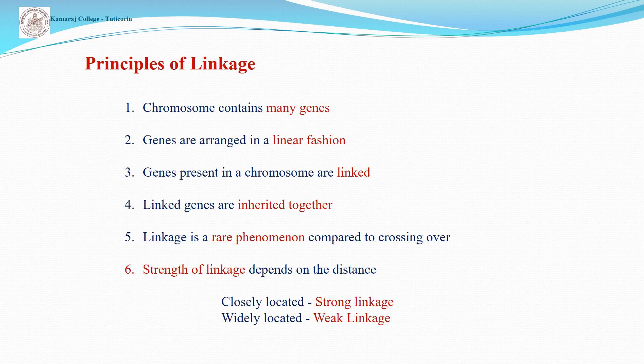These are some of the significant characters for linkage. The chromosomes contain many genes. The genes are arranged in a linear fashion in chromosomes, and the genes present in the chromosomes are linked. The linked genes are inherited together from parents to offspring. Linkage is a rare phenomenon compared to crossing over. The strength of linkage depends on the distance between the linked genes — closely located genes show strong linkage, while widely located genes show weak linkage.